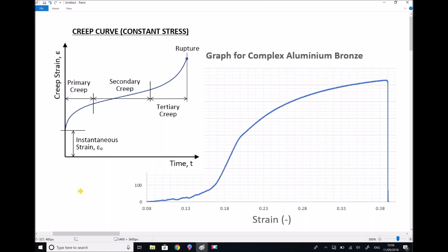In this video we're going to look at the effects of something called creep in engineering materials. Now a good starting point for understanding creep is to look at results from a UTS test, and we've seen the graph on the right hand side previously. This is the stress-strain graph for complex aluminium bronze.